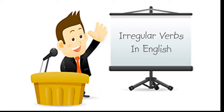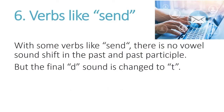This video will help you see relationships among various types of irregular verbs in English. The key to understanding irregular verbs is to look for and notice the patterns. With verbs like send, there is no vowel sound shift in the past and the past participle, but the final D sound is changed to a T.